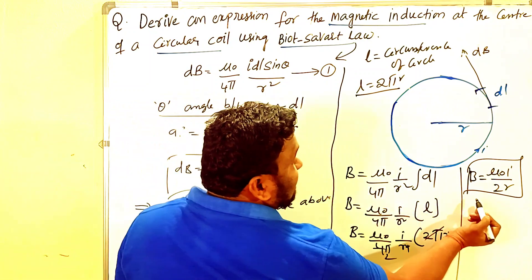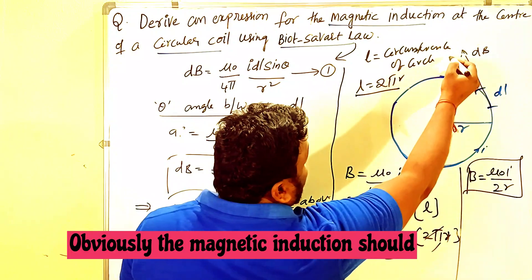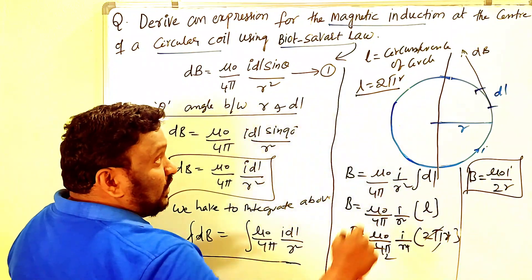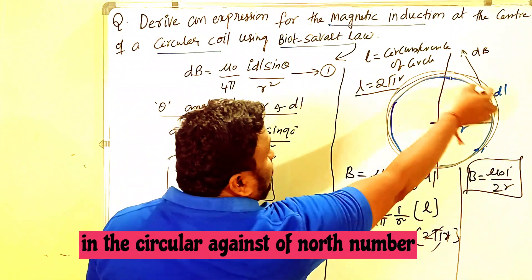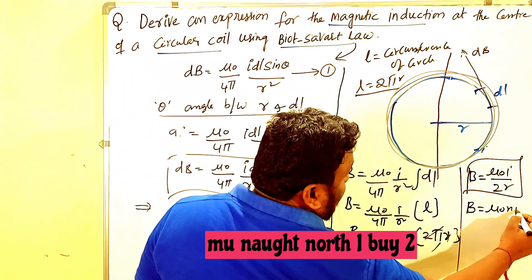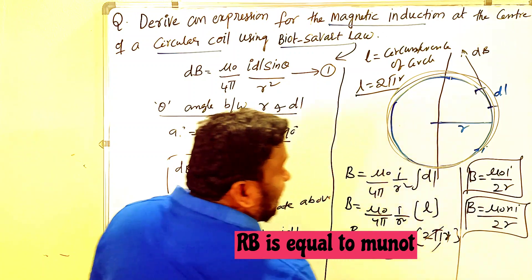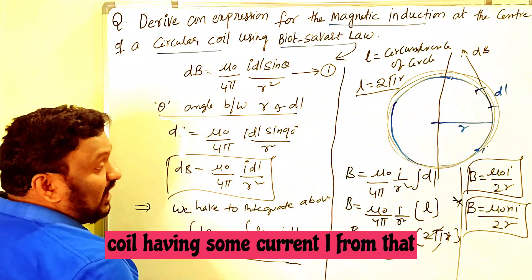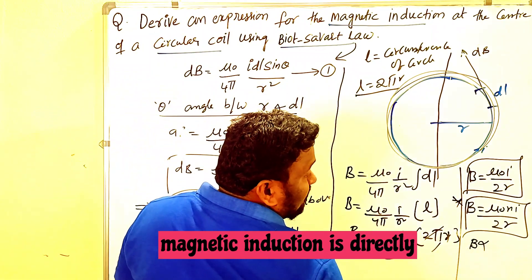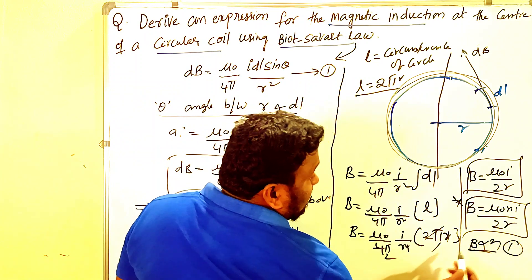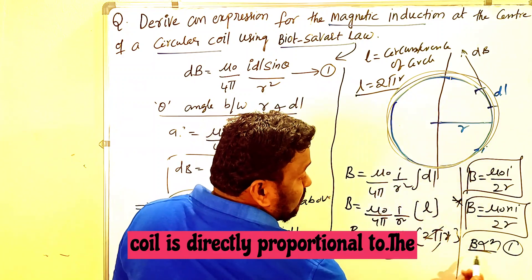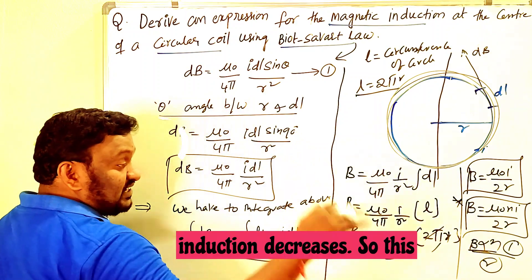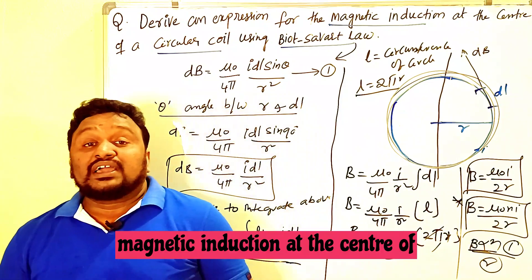So B = μ₀I / 2r is the magnetic induction at the center of the circular coil carrying current I. If the coil consists of n number of turns, this equation becomes B = μ₀nI / 2r. From this expression, the magnetic induction is directly proportional to the number of turns and current, and inversely proportional to the radius — as radius increases, magnetic induction decreases.